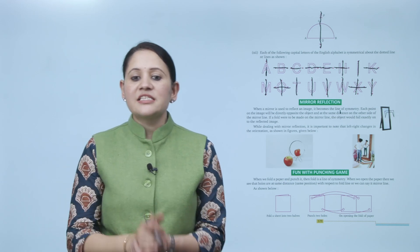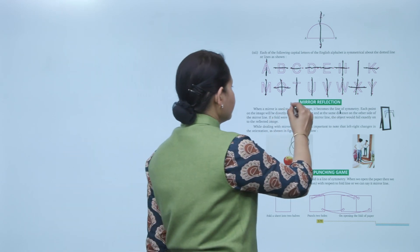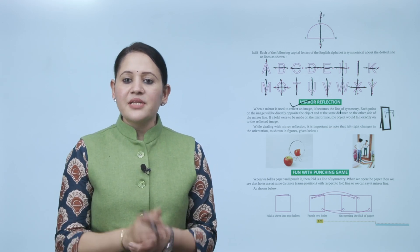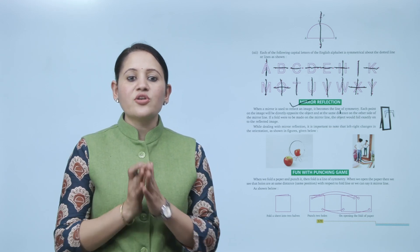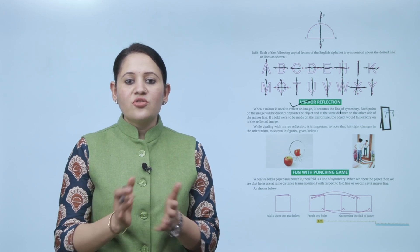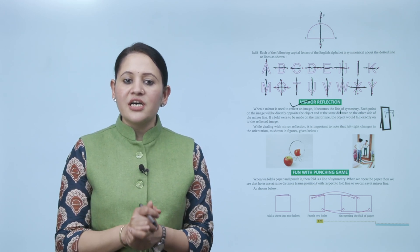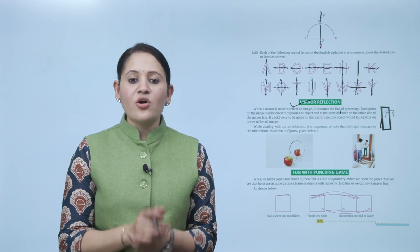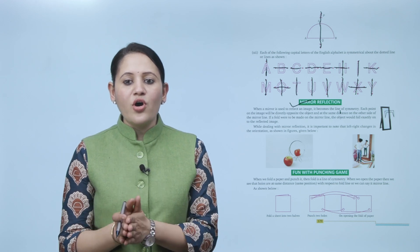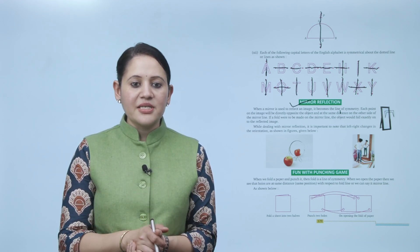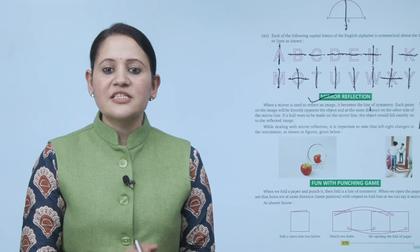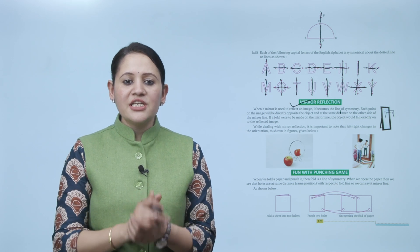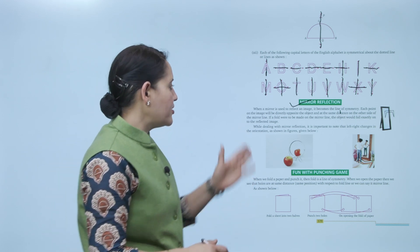Next is mirror reflection. When a mirror is used to reflect the image, it becomes the line of symmetry. Each point on the image will be directed opposite to the object and at the same distance on the other side of the mirror line. If a fold were to be made on the mirror line, the object would fall exactly on the reflected image. It is important to note that right and left change in the orientation in mirror reflection.